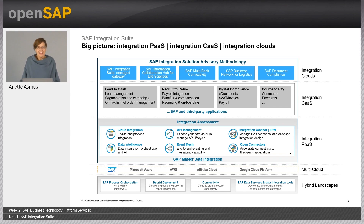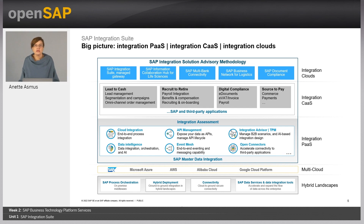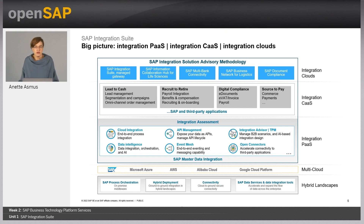Here comes an even bigger picture. In the middle portion of the integration suite stack, you can see again the different integration capabilities — like Cloud Integration, API Management, and so forth — which make up an integration platform as a service. On top, we have pre-packaged content that supports integration for intelligent end-to-end processes and scenarios across SAP applications, and also for the integration between SAP and non-SAP applications. Additionally, we provide so-called industry-specific clouds — tailored integration solutions for dedicated use cases — like the SAP Integration Suite Managed Gateway, which is the new name for the SAP Ariba Cloud Integration Gateway.